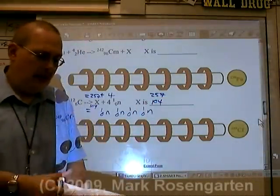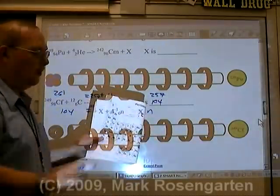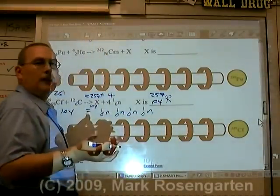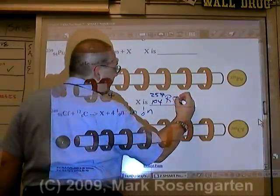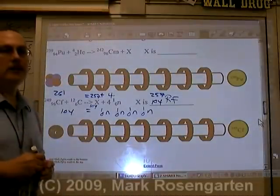According to the periodic table, element 104, named for the person who discovered the process of artificial transmutation, is Rutherfordium. And that's how you do artificial transmutation.